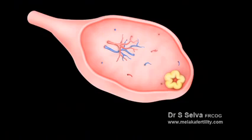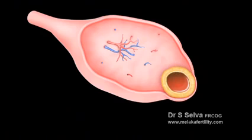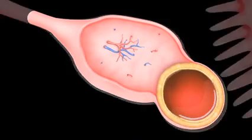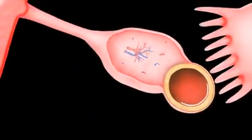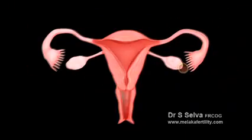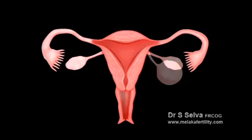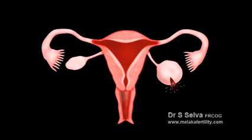Luteal cysts are less common. They develop when the tissue that is left behind after an egg has been released — called the corpus luteum — fills with blood. Luteal cysts usually disappear on their own within a few months, but can sometimes rupture, causing internal bleeding and sudden pain.